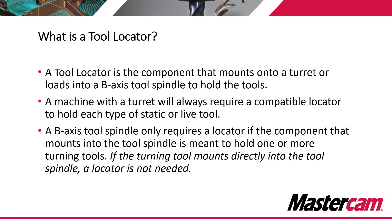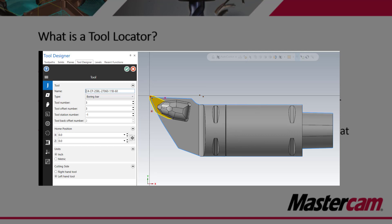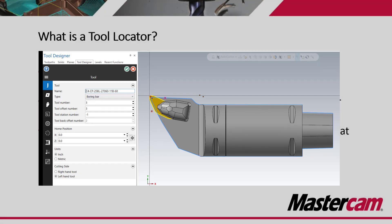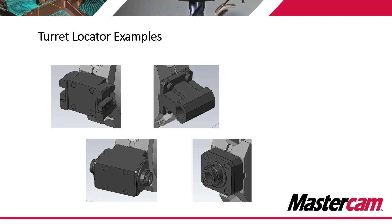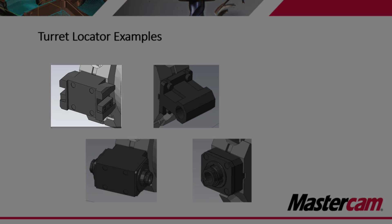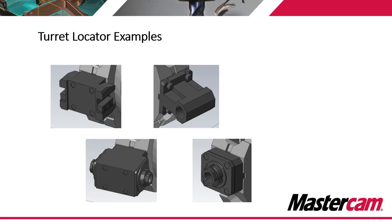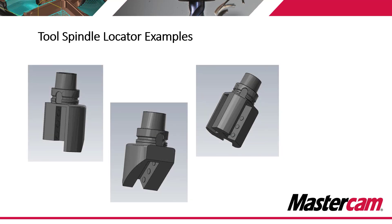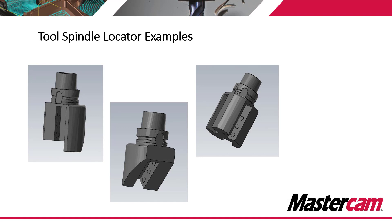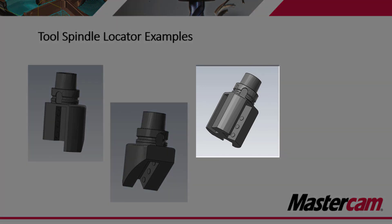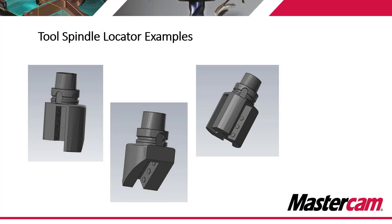We could utilize something like Mastercam's 3D tool builder to design a tool and also the compatible insert that goes with it. Looking at some examples of tool locators for a turret, we might have locators that hold stick tooling, a boring bar, or something to use a live tool on the face of the part or the outside diameter. For a tool spindle on a B axis head style machine, we also have the ability to use a locator that can hold a single tool in a vertical orientation, at 45 degrees, or horizontally. We also have the option of a tool locator that has multiple positions on it, so we can define multiple positions where tools can be located on that single holder.